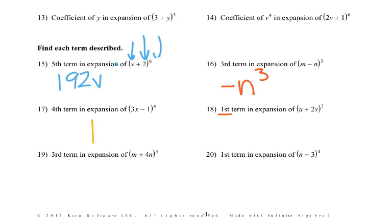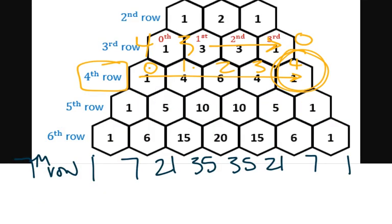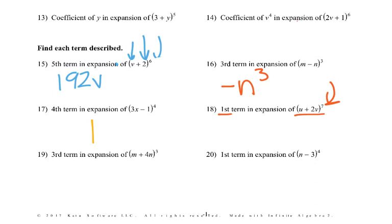Problem 18 wants the second term in the expansion of (u + 2v)^7, so we go to row seven. The second term is at position one: coefficient seven, u to the sixth, times 2v to the first. Since 2v to the first is just 2v, two times seven is fourteen, giving us 14u^6 v.